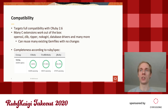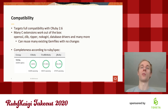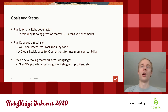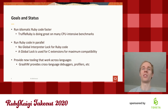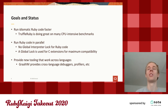In terms of completeness, according to RubySpec, TruffleRuby passes 97% of the specs, which is quite good — actually the best ratio for any alternative Ruby implementation. One of the big TruffleRuby goals is to run Ruby code faster, and TruffleRuby is already doing great on many CPU-intensive benchmarks and micro-benchmarks. But what about web applications? That's what we look at today.